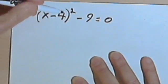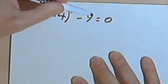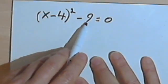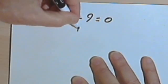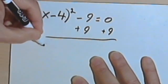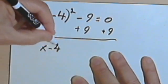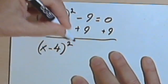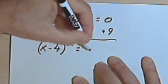So I've got x minus 4 squared minus 9. And I've got to get this 9 over to the other side of the equation. So I'll just add a 9 to both sides. That's going to give me x minus 4 squared equals 9.